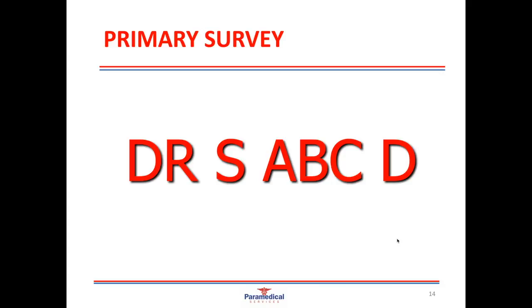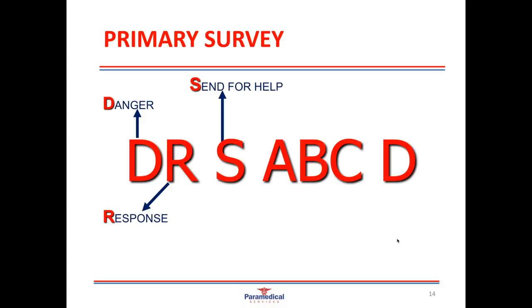The DRS ABCD approach: D stands for danger — when you walk on scene, make sure it is safe to approach so you don't become injured or a patient yourself. Always assess the area for any dangers. R is checking response — testing whether the patient has a good or poor level of consciousness. S is send for help — call for an ambulance and engage early access as soon as possible. A is airway, B is breathing, C is compressions, and D is defibrillation.